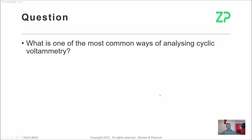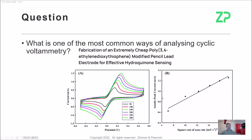What is one of the most common ways of analysing cyclic voltammetry data? I've pulled something from the literature where you'll often see cyclic voltammetry presented with peak height as a function of the square root of scan rate. This relationship is characterized or defined in the Randles-Sevcik equation.